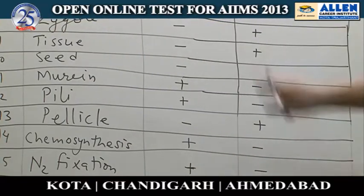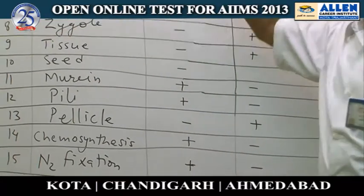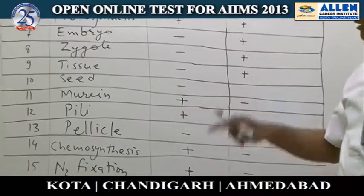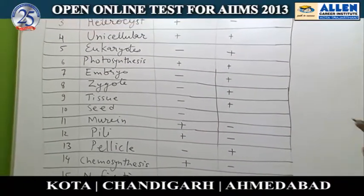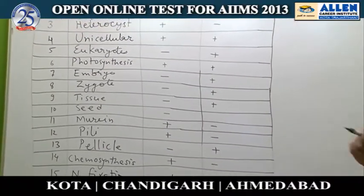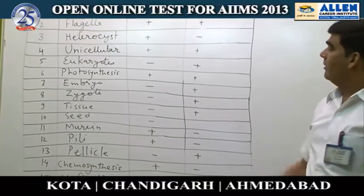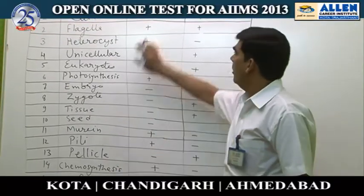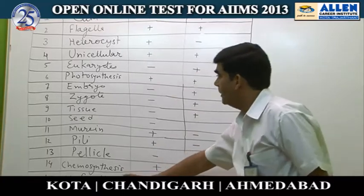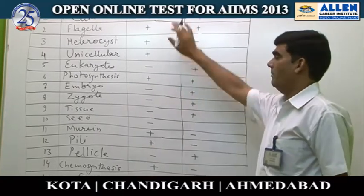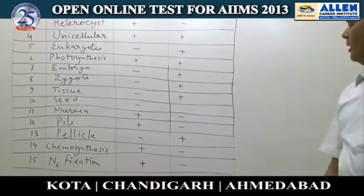Similarly, the last character — nitrogen fixation. As discussed earlier, heterocysts present in Monera are meant for nitrogen fixation. So nitrogen fixation and heterocysts are exclusive characters of Monera.